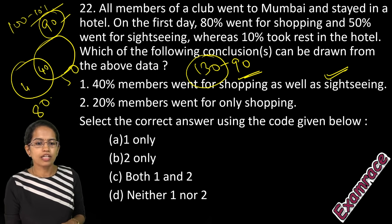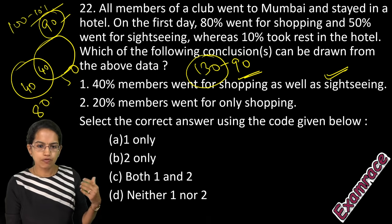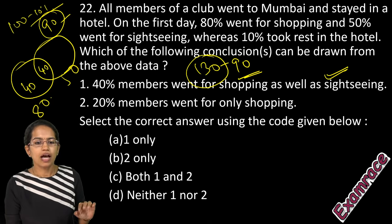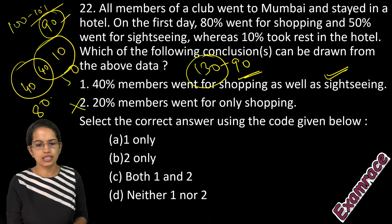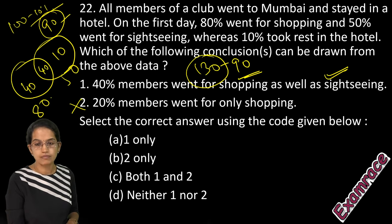40 only went for shopping and 10 only went for sightseeing. So the second statement is incorrect — only the first statement is correct.